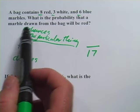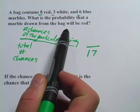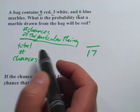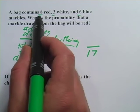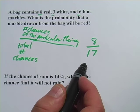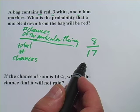And then it says, what is the probability that a marble drawn from the bag will be red? Well, the number of chances of the particular thing happening that it's red, there are eight red marbles, so there are eight chances out of seventeen that the marble you pick will be red.